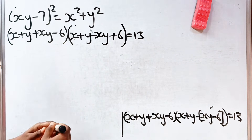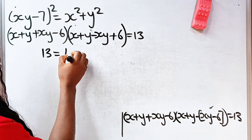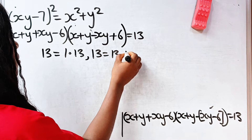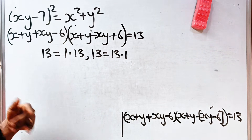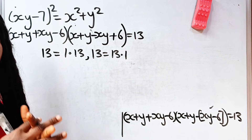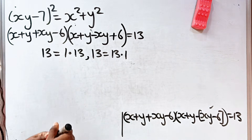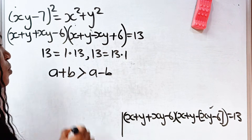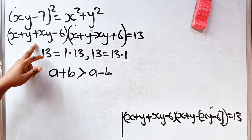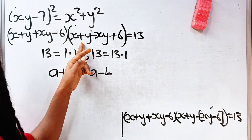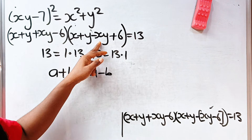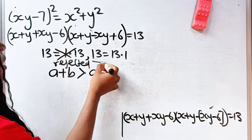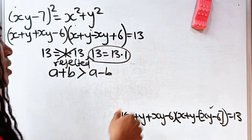Now, 13 can be written as 1 × 13, and also as 13 × 1. Remember that x and y are positive integers, which means (a + b) should be greater than (a - b). So the factor pair 1 × 13 in that order is rejected. We can only apply 13 × 1.